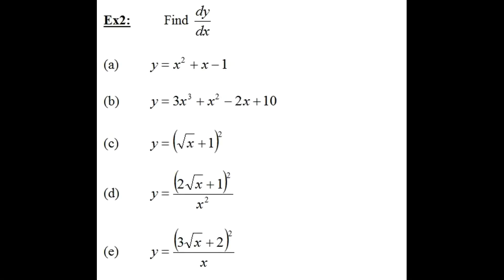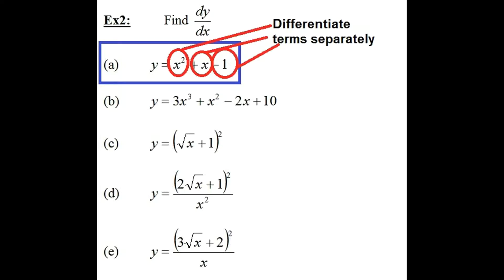So example number 2, part A reads: find dy over dx for y is equal to x squared plus x minus 1. Now if we have a summation of functions, we need to differentiate each term separately. So let's try part A — back to the paper and pen.